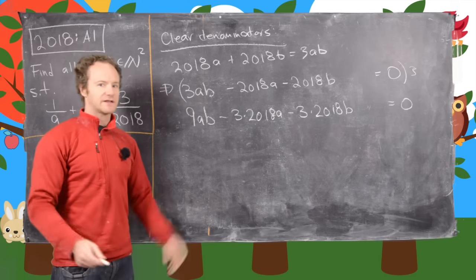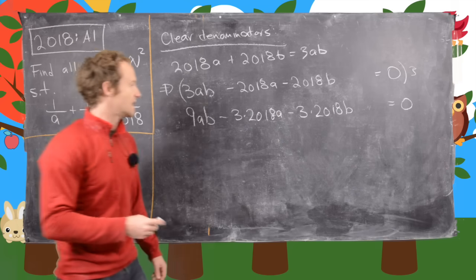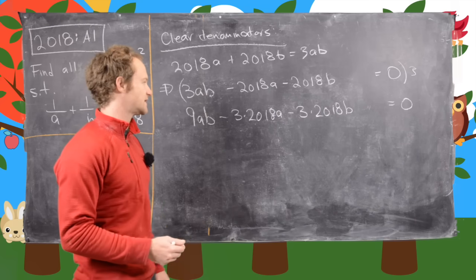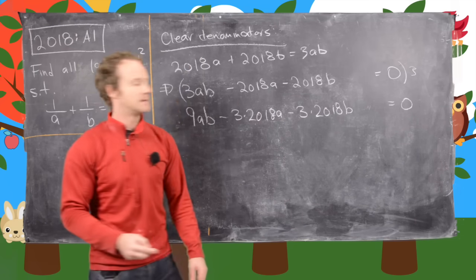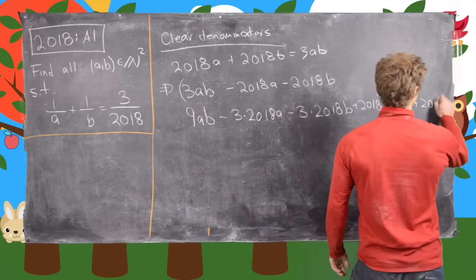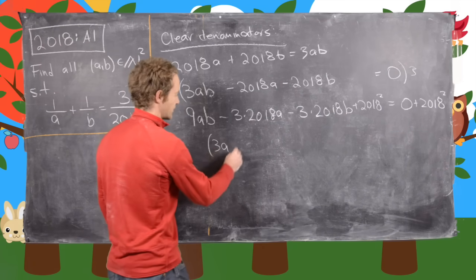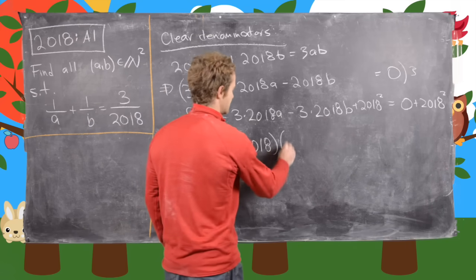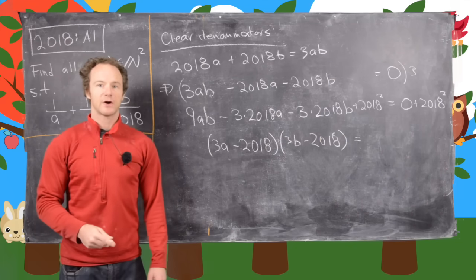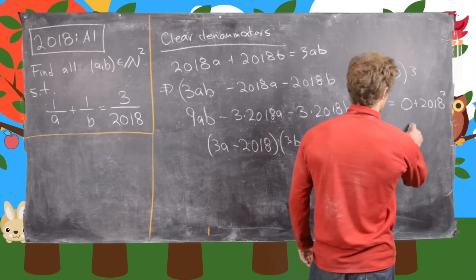Now we complete this into a factorable product on the left-hand side. We notice we have 3·A·2018 and 3·B·2018 here, so if we add 2018² to both sides, the left-hand side factors as (3A − 2018)(3B − 2018) = 2018², which factors into primes as 2² · 1009².